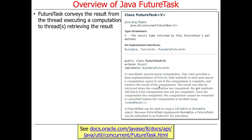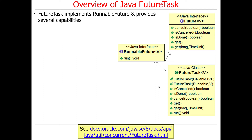So what is a future task? It's a way to get a result from a thread that executes a computation to one or more threads trying to get the result. As the name suggests, it's both a future — something you can wait on for completion — and a task — something that runs and does computation. It implements RunnableFuture, and RunnableFuture in turn implements the Future interface.